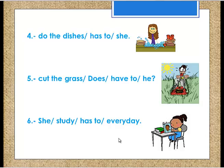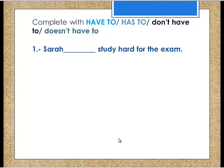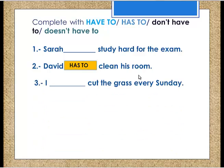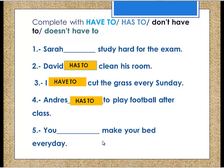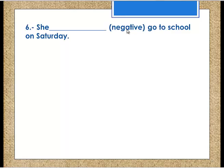Now complete the following sentences. Number one: 'Sarah ___ study hard for the exam' — it's 'has to' because Sarah is singular. Number two: 'David ___ clean his room' — 'has to,' because he is singular. Number three: 'I ___ cut the grass every Sunday' — 'have to.' Number four: 'Andre ___ play football after class' — 'has to,' singular. Number five: 'You ___ make your bed every day' — 'have to.' Back to number one — Sarah is 'has to.' Number six: 'She ___ go to school on Saturday' — we use the negative: 'doesn't have to.'